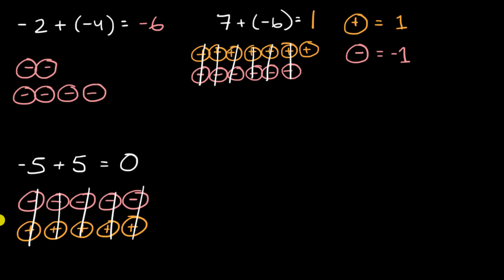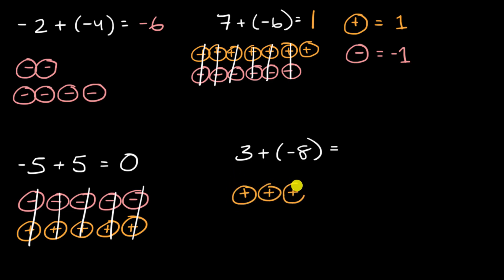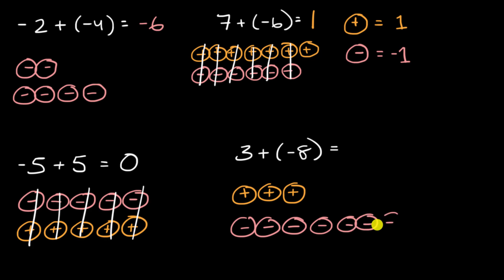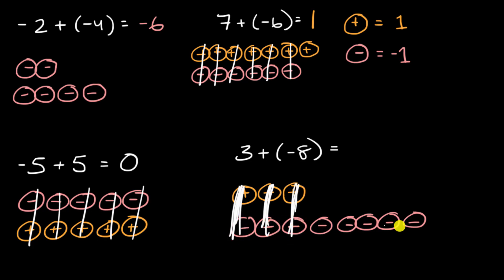Last but not least, let's add three and negative eight, and represent that with integer chips. Positive three is one, two, three positive integer chips. Negative eight is one, two, three, four, five, six, seven, eight of these negative integer chips. These cancel, these cancel, these cancel. So you have zero plus zero plus zero, plus what do you have left over? Five of these negative integer chips — that's going to be equal to negative five.